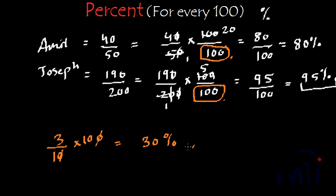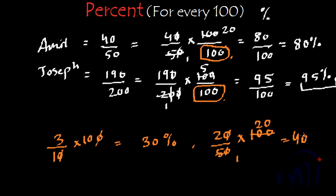For example, if I want to convert 3 by 10 into percent, I just multiply it by 100 and this becomes 30 percent. And if somebody has scored 20 marks out of 50 — multiply 20 by 50 by 100 — that gives 40 percent. So to convert any fraction into percentage, we just multiply that fraction by 100. We are going to discuss this conversion of fractions into percentage again in our next video, so watch those videos.